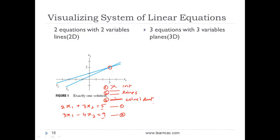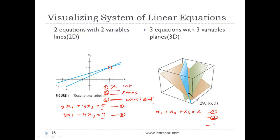Now for three variables and three equations, an equation like x1 plus x2 plus x3 equals 6 would represent a plane. So what we are actually having is three planes when we have three equations.